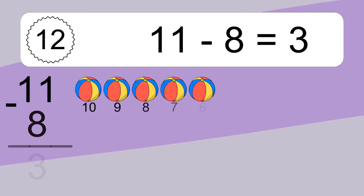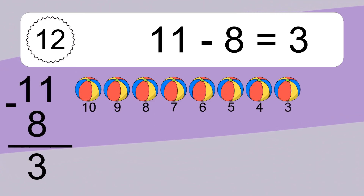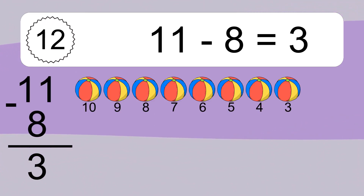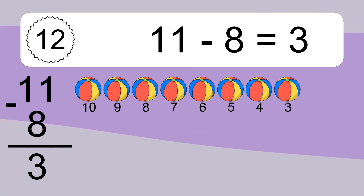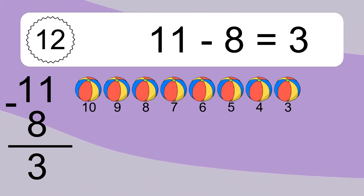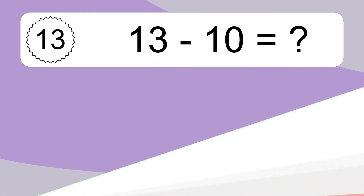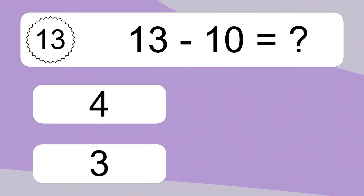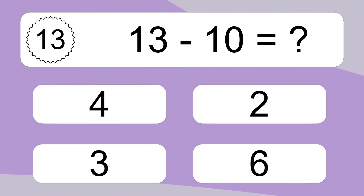11 minus 8 equals what? 11 minus 8 equals 3. Let's count it: 10, 9, 8, 7, 6, 5, 4, 3.